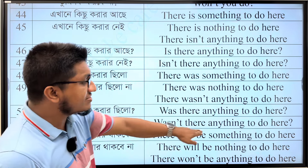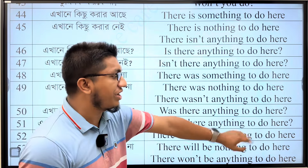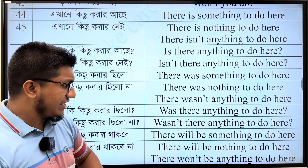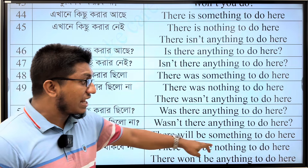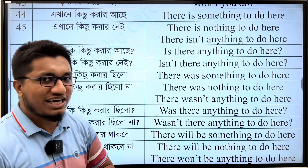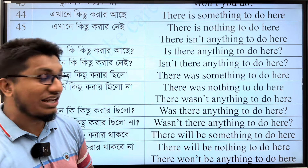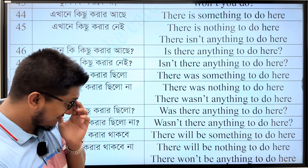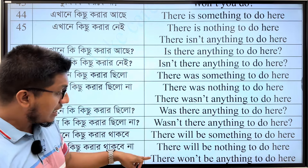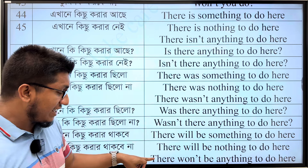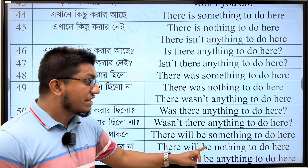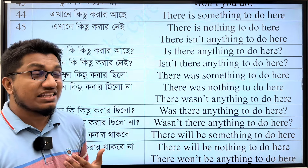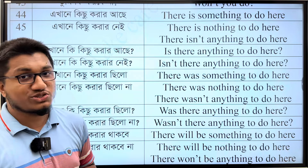There will be something to do here. There will be nothing to do here. Will there be nothing to do here? You can say: there won't be anything to do here. There won't be anything to do here.